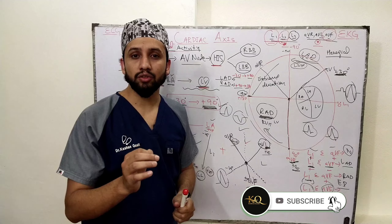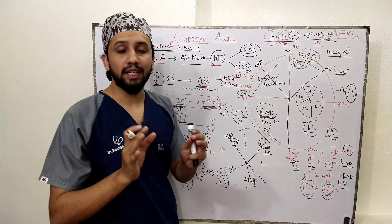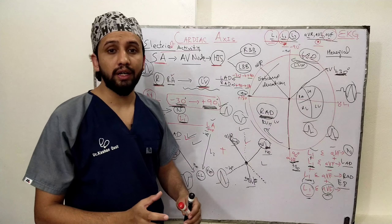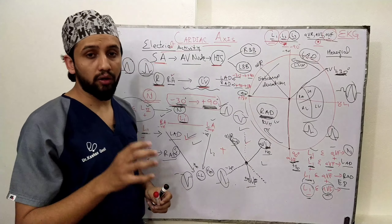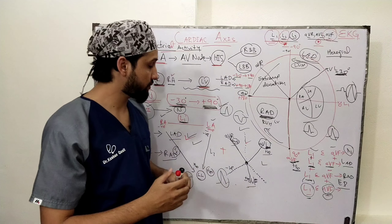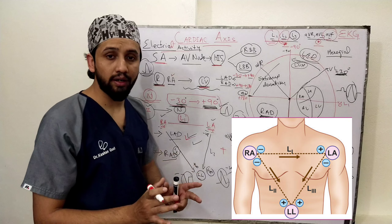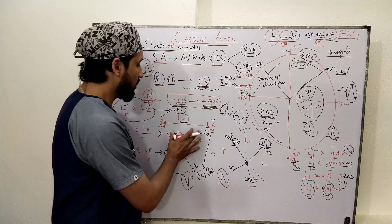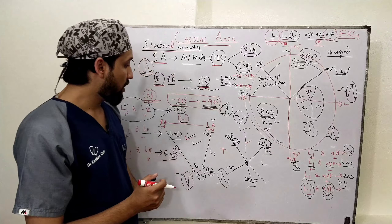This electrical activity is collected by means of electrodes or leads — Lead 1, Lead 2, and Lead 3, and AVR, AVL, and AVF. These six leads are important because they collect data for cardiac axis determination. Lead 1, Lead 2, and Lead 3 collect the potential difference between the limbs. Lead 1 collects the potential difference between the left arm and right arm. Lead 2 and Lead 3 collect the potential difference between the left arm and left leg, and right arm and left leg respectively. This is how the Einthoven's triangle is formed.